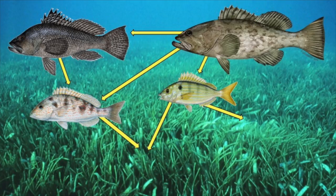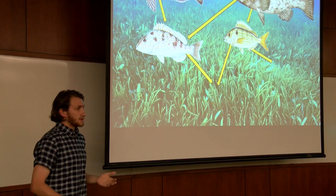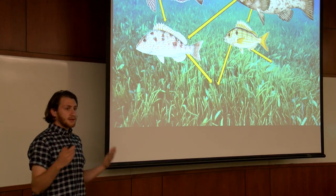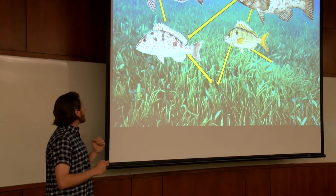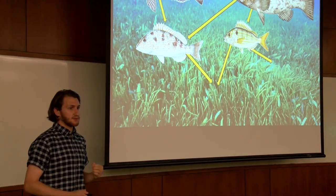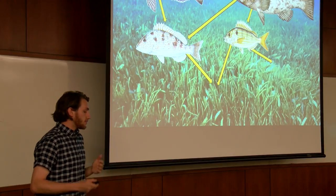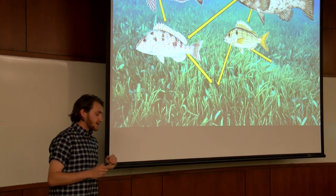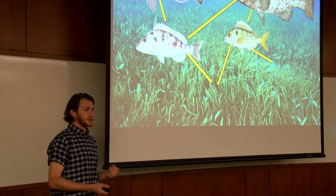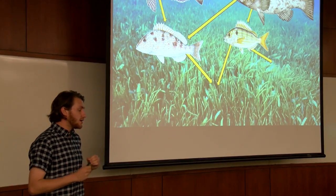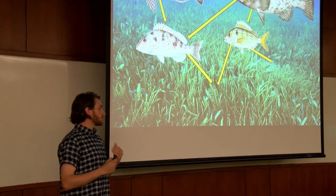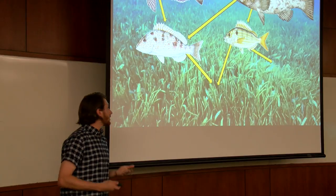Environmental and interactive gradients really establish food web structure at very local scales. To understand how all those things interact, we need a good idea of the way that species function in the environment — or their niche. But this is a concept that's very hazy and very hard to define. It's very difficult to pin down all the different parts that go into someone's functional role in their environment.